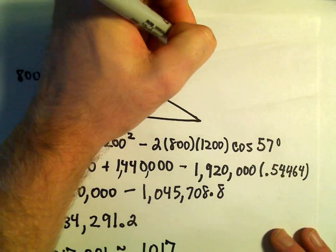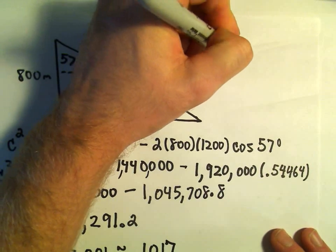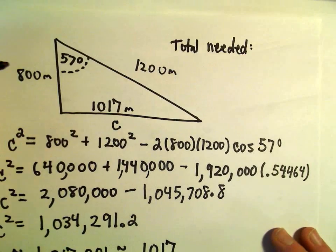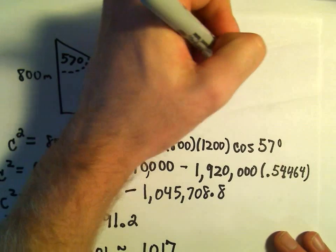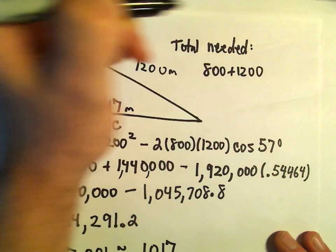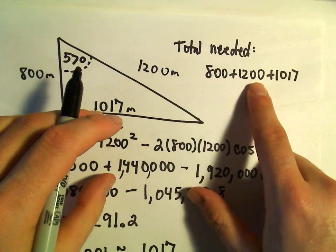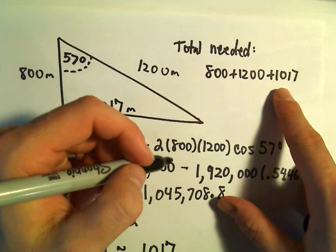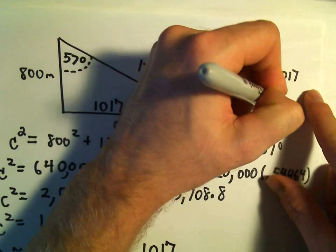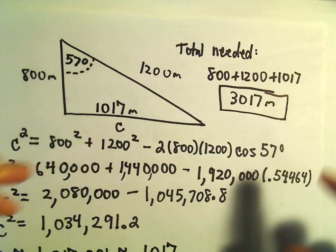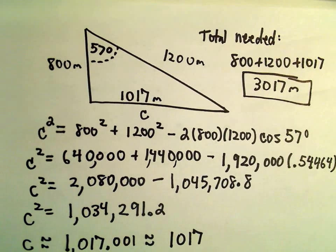So if we want to know the total amount of fencing, now we just need to add them up. 800 plus 1,200 plus 1,017. Well, 800 and 1,200, that's going to be 2,000. So it looks like we'll get 3,017 meters of fencing total that would be required in this problem.